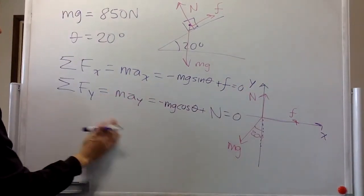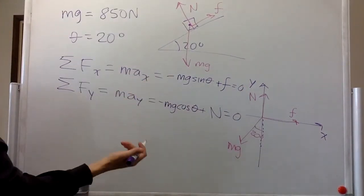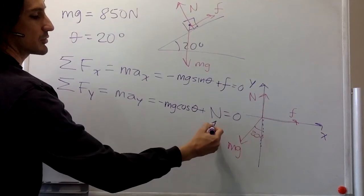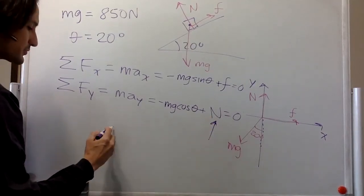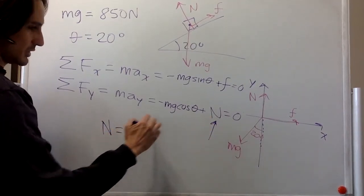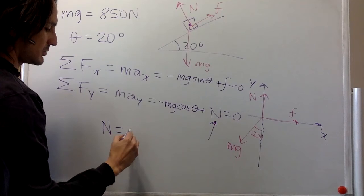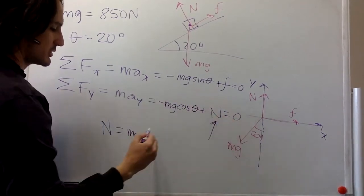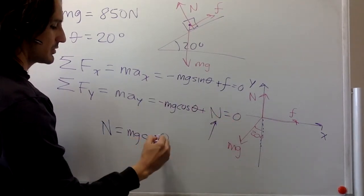So we collected a lot of information here. The only thing that we're being asked for is the magnitude of the normal. So the normal is plus mg, we're going to move this one over here, cosine theta.